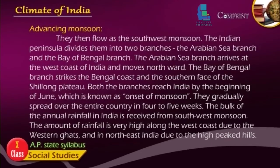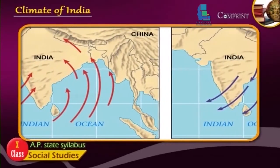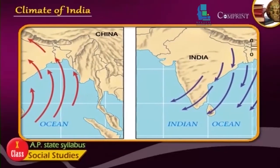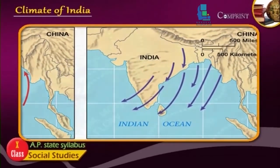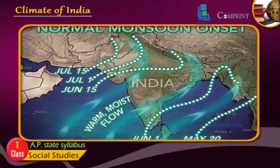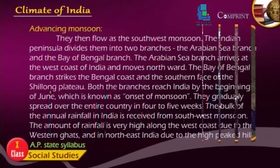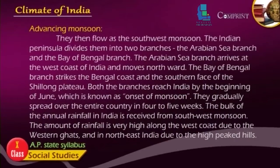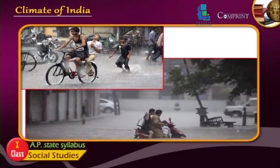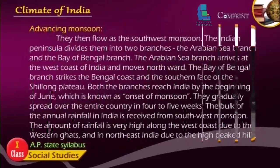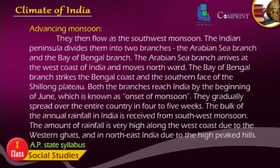The Indian Peninsula divides the southwest monsoon into two branches: the Arabian Sea Branch and the Bay of Bengal Branch. The Arabian Sea Branch arrives at the west coast of India and moves northward. The Bay of Bengal Branch strikes the Bengal coast and the southern face of the Shillong Plateau. Both branches reach India by the beginning of June, which is known as the onset of monsoon. They gradually spread over the entire country in four to five weeks. The bulk of the annual rainfall in India is received from the southwest monsoon. The amount of rainfall is very high along the west coast due to the Western Ghats, and in northeast India due to the high-peaked hills.